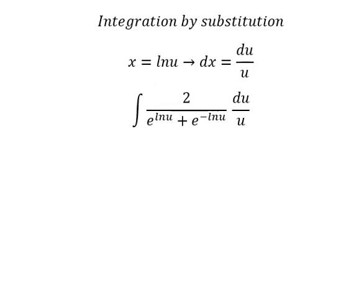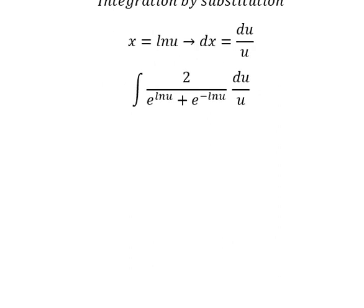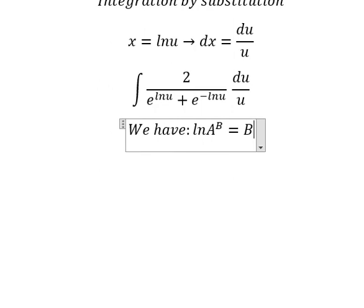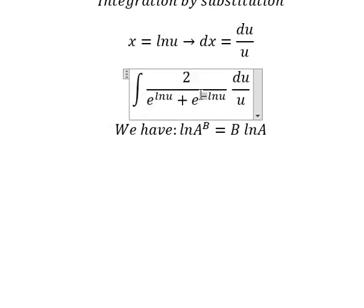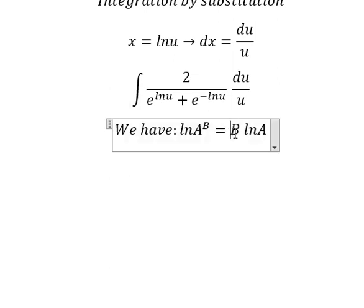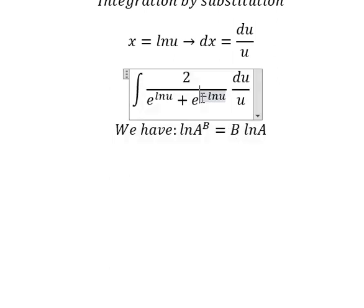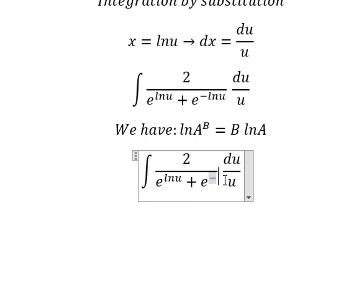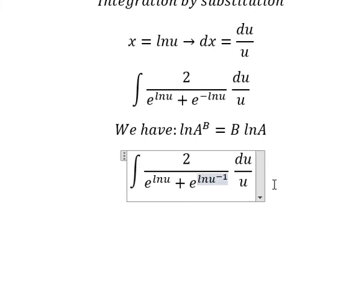Next we have the formula ln A to the power of B equals B ln A. So negative 1 here is the capital B, so I will put this negative 1 inside the natural log. This gives us ln u to the power of negative 1.